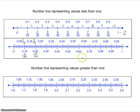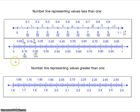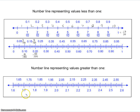Number lines can be used to represent decimals or fractions. Sometimes we have to have number lines that go beyond zero to one. The process is still the same even if we start at a different value other than zero. In this example, this number line starts at 1.6 and goes to 2.6. Looking at the number of markings in between tells us what we need to count by — there are ten markings in between, meaning each marking would be worth a tenth.